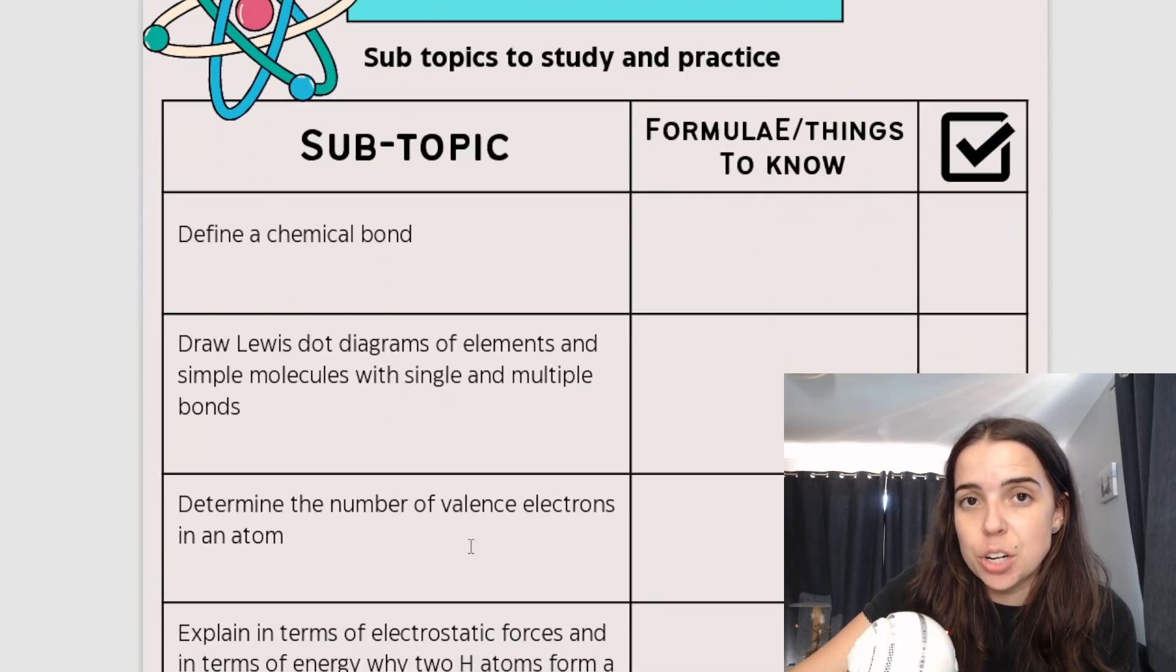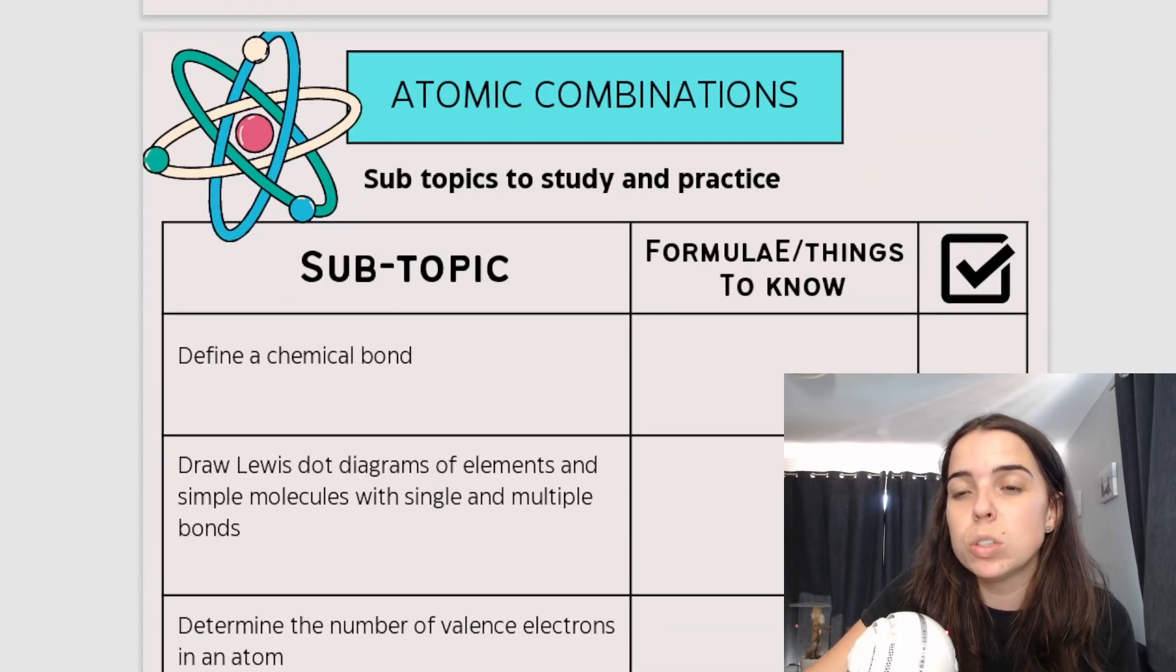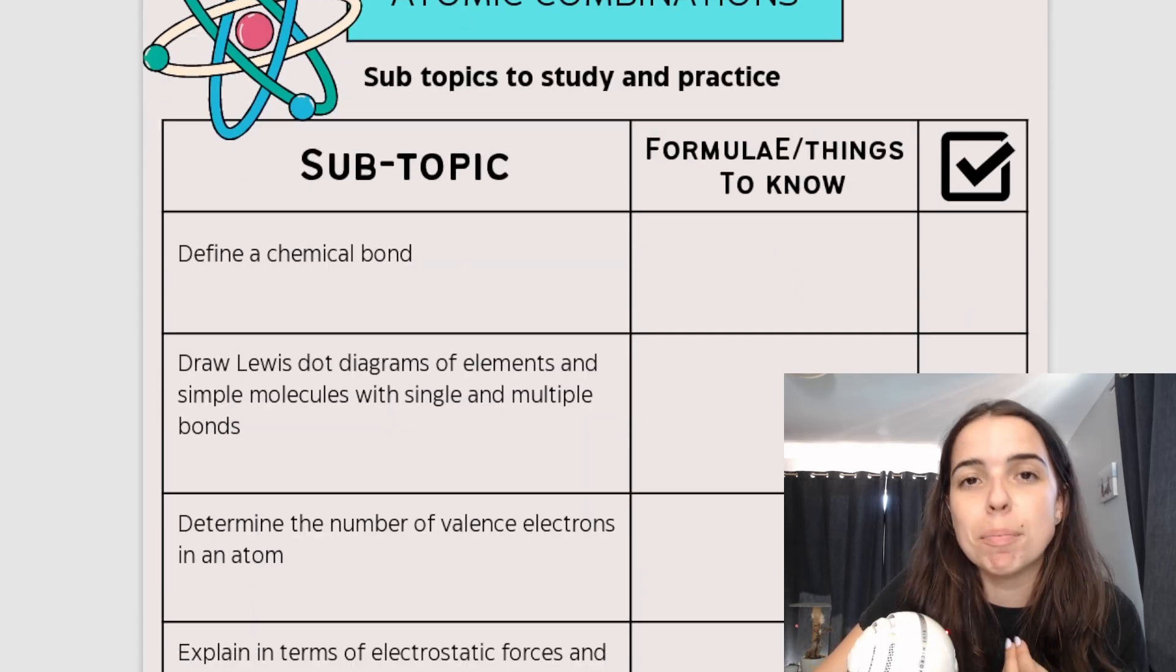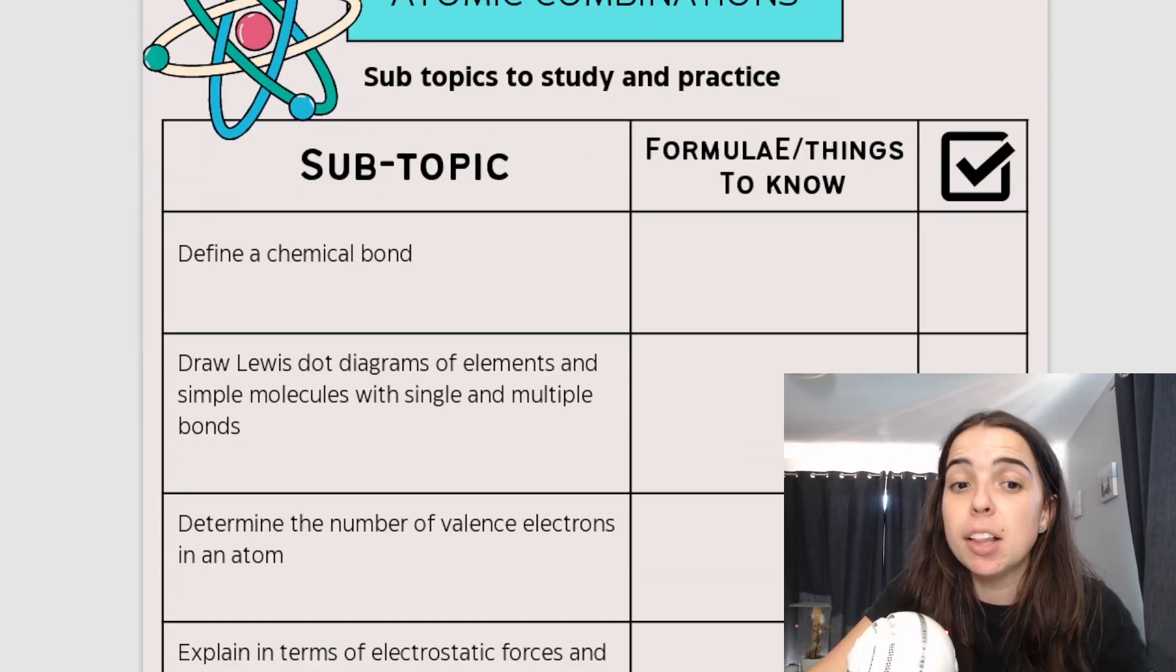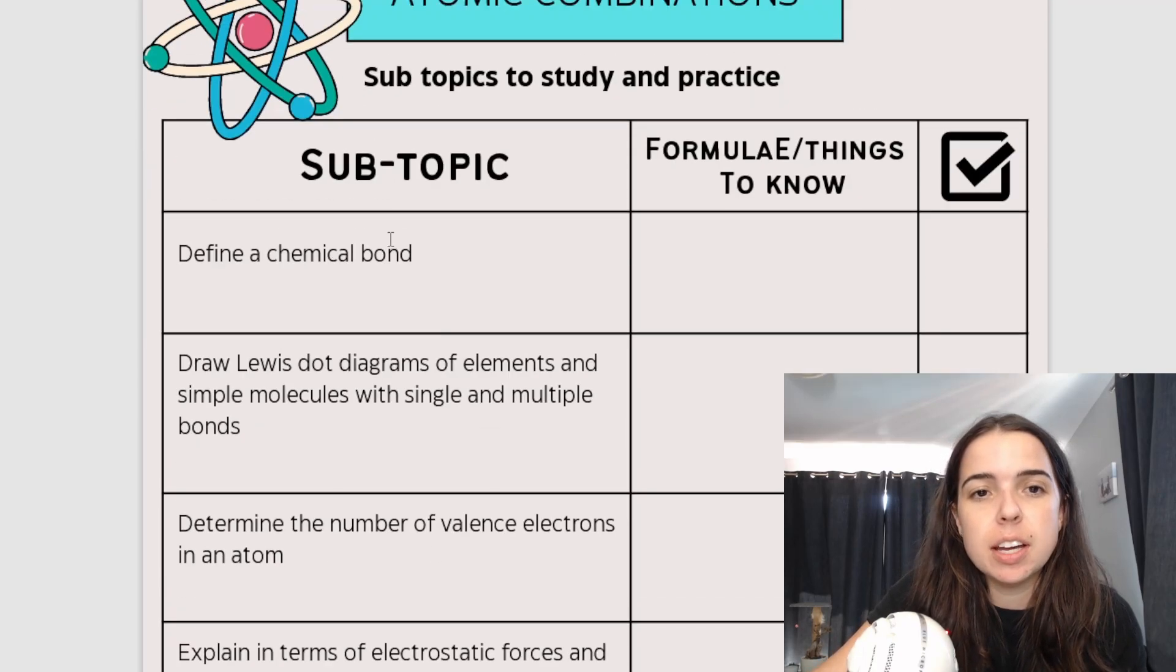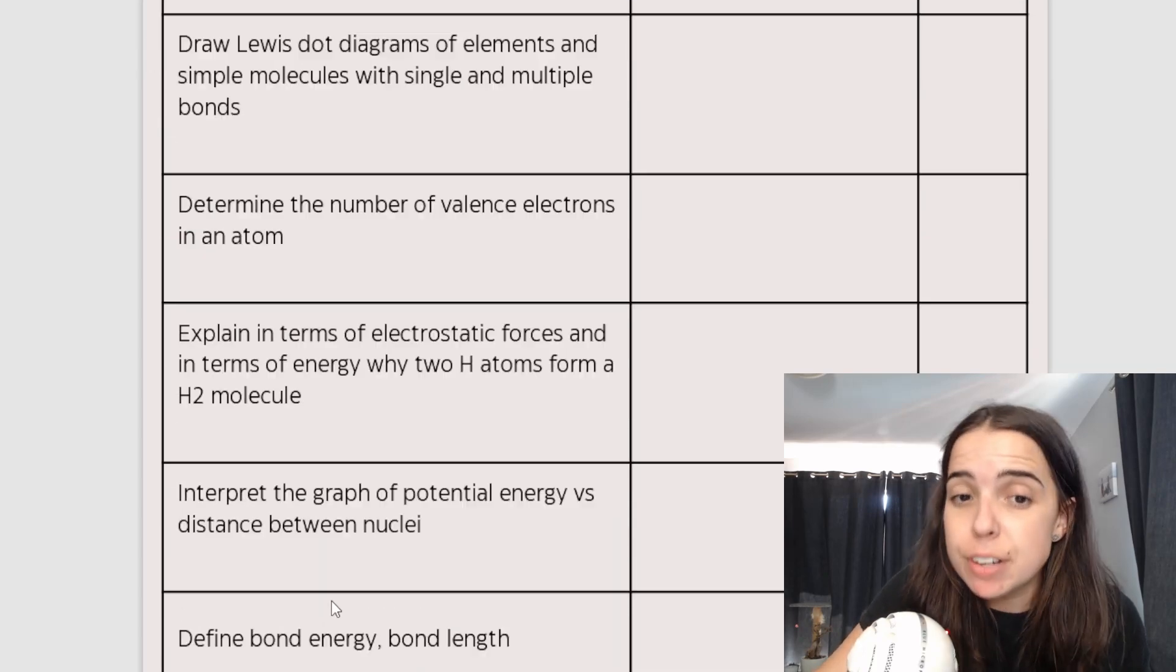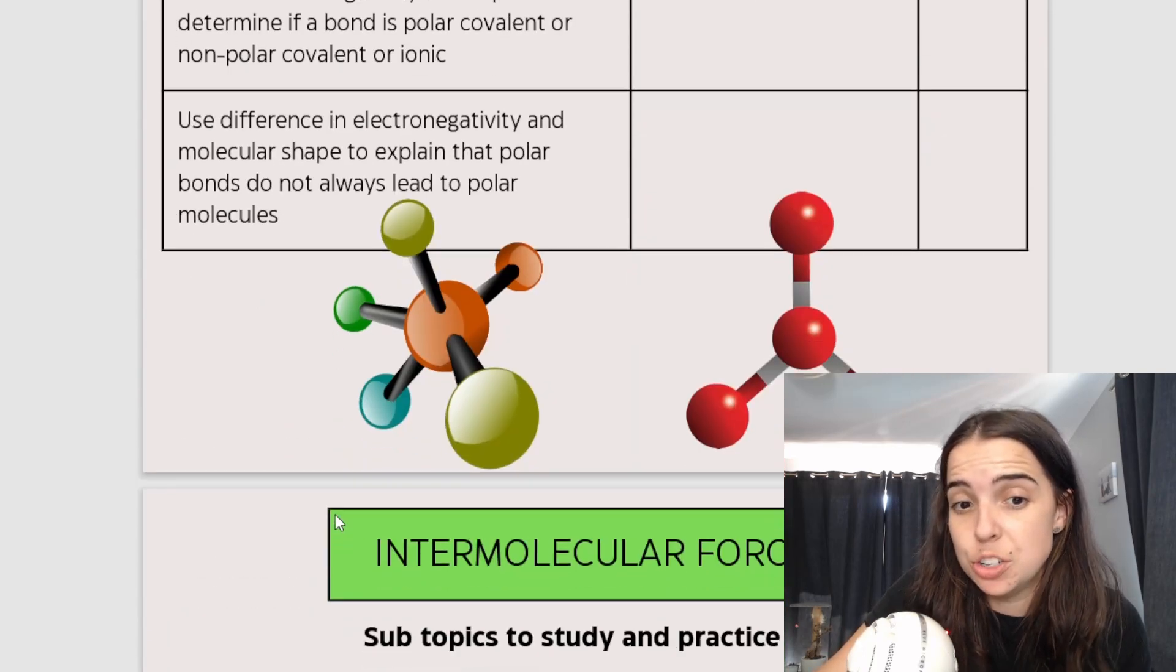Our next section, or our next topic, is basically called atomic combinations. Now this is a chemistry topic. It's quite a broad chemistry topic. It includes a lot of things relating to bonding, chemical bonding. So you can see here I said subtopics, and I list everything that falls under this. It's quite a lot, as you can see.